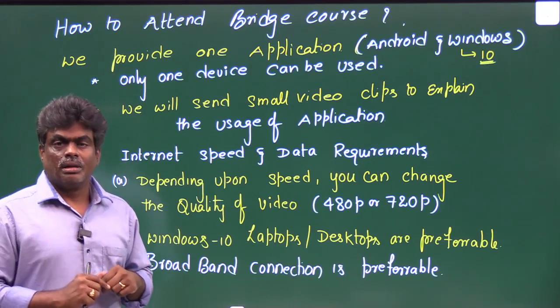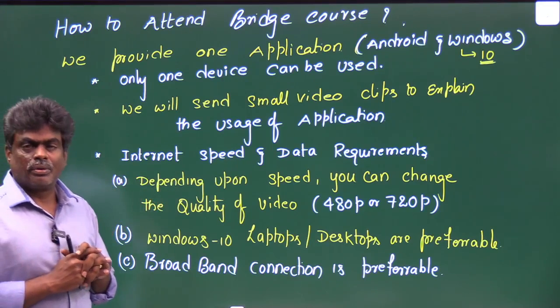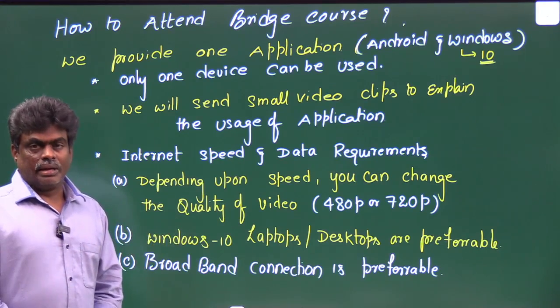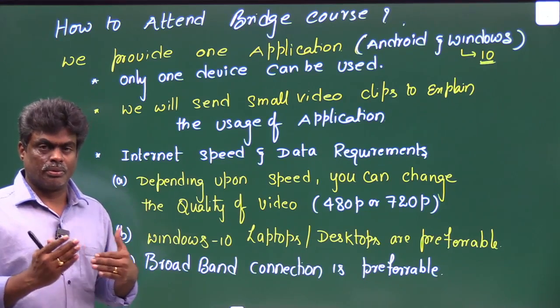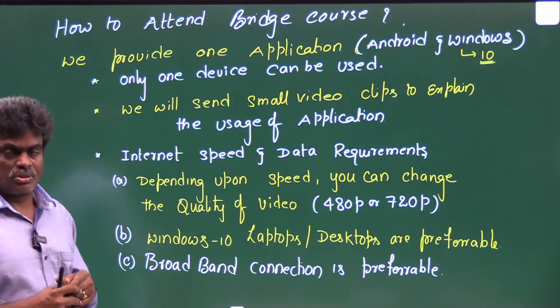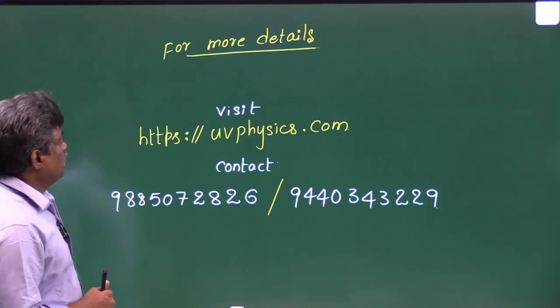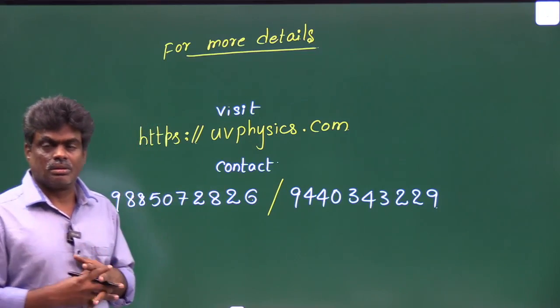Internet speed: you must have good internet speed. Broadband connection is better or preferable than mobile network, but still some areas have good mobile network also, it's okay. That's it.